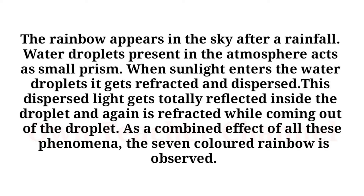After rainfall, water droplets present in the atmosphere act as small prisms. When sunlight enters the water droplet, it gets refracted and dispersed. This dispersed light gets totally internally reflected inside the droplet and is again refracted while coming out. As a combined effect of all these phenomena, the seven-colored rainbow is observed.